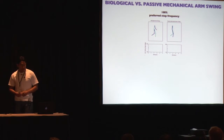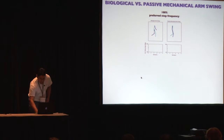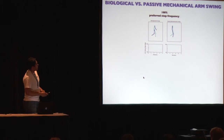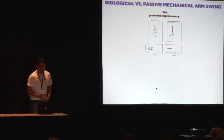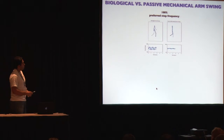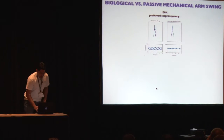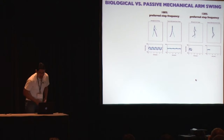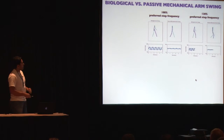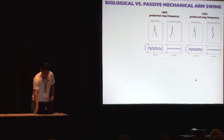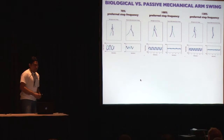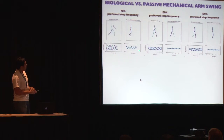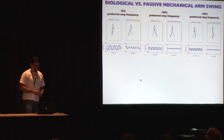Comparing biological and passive mechanical arms at preferred step frequency, with biological arm swing on the left and passive mechanical arms on the right, we can clearly see that the amplitude of biological arm swing exceeds that of the passive mechanical arms. At the fastest step frequency, biological arms still swing at higher amplitude than passive mechanical arms. Most interestingly, at the slowest step frequency with very long steps, we see an increase in the amplitude of both biological and passive mechanical arms, but the biological arm amplitude still exceeds that of the mechanical arms.